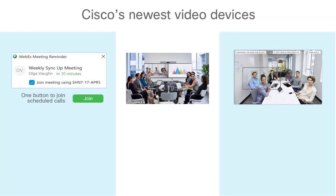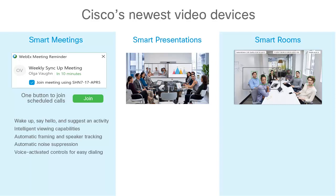Cisco's newest video devices share three distinct characteristics: they enable Smart Meetings, Smart Presentations, and Smart Rooms. Smart Meetings happen through the device's ability to wake up, say hello, and suggest an activity. Powerful cameras deliver intelligent viewing capabilities such as automatic framing and speaker tracking. Other AI capabilities include automatic noise suppression to reduce meeting interruptions and voice-activated controls for easy dialing.